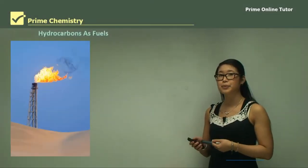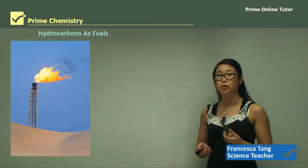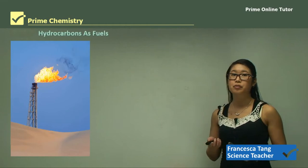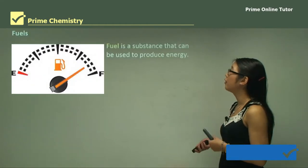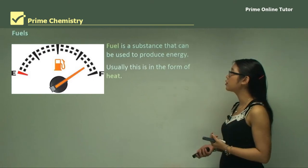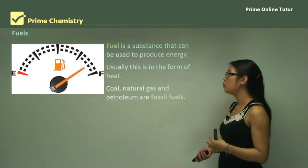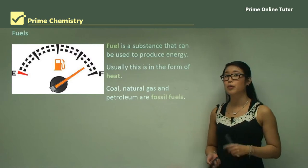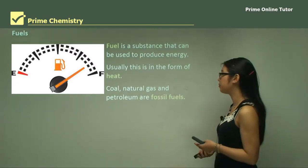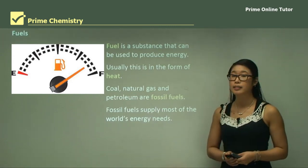Hey guys, last lesson we were looking at formation of fossil fuels. Now we're looking at hydrocarbons as fuels. A fuel is a substance that can be used to produce energy, usually in the form of heat. Coal, natural gas and petroleum are all fossil fuels which we discussed last lesson. Fossil fuels supply most of the world's energy needs.